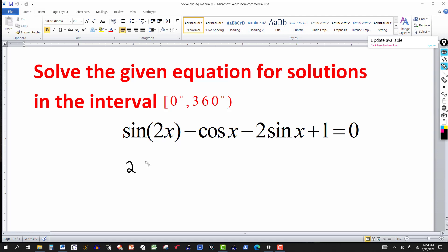So using one of your identities tells me that if you have the sine of twice an angle, that's going to be the same thing as twice the sine of just the angle and the cosine of x.